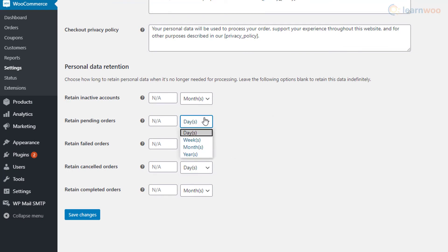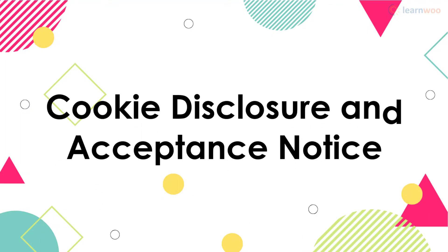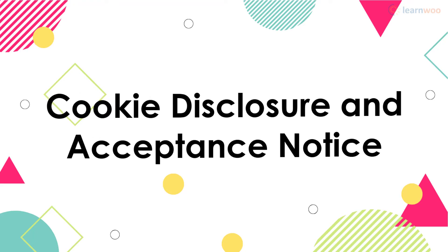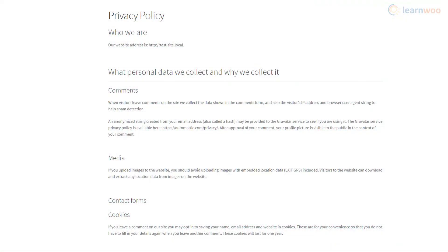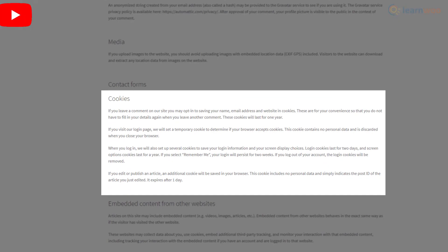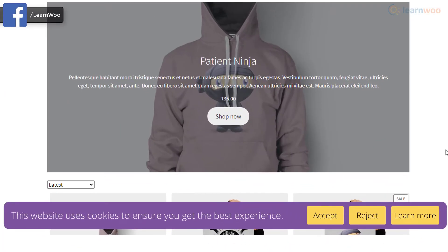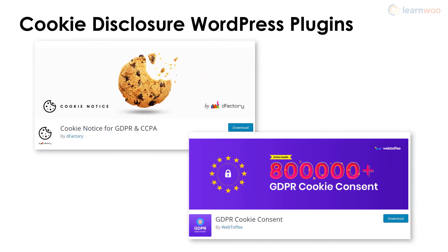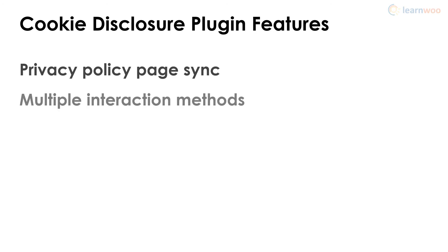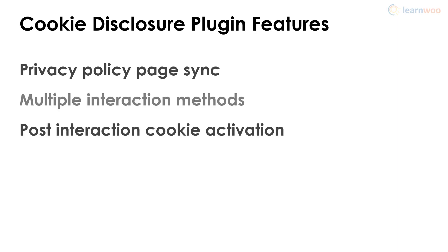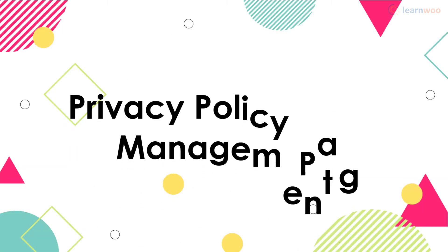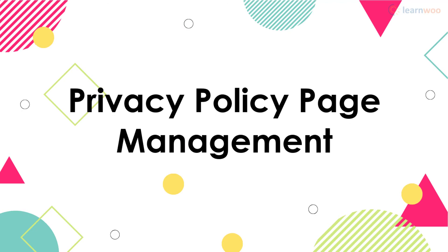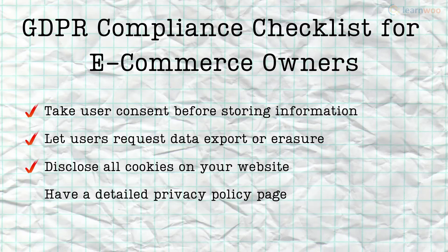GDPR mandates that you disclose all your cookie details to your visitors. Cookie use should not only be mentioned in the privacy policy page, but it should also be disclosed through a notice on the landing page. WordPress plugins like Cookie Notice and GDPR Cookie Consent help you comply, with features like privacy policy page sync, various user interaction methods, post-interaction cookie activation, button customization, WPML compatibility, and more.